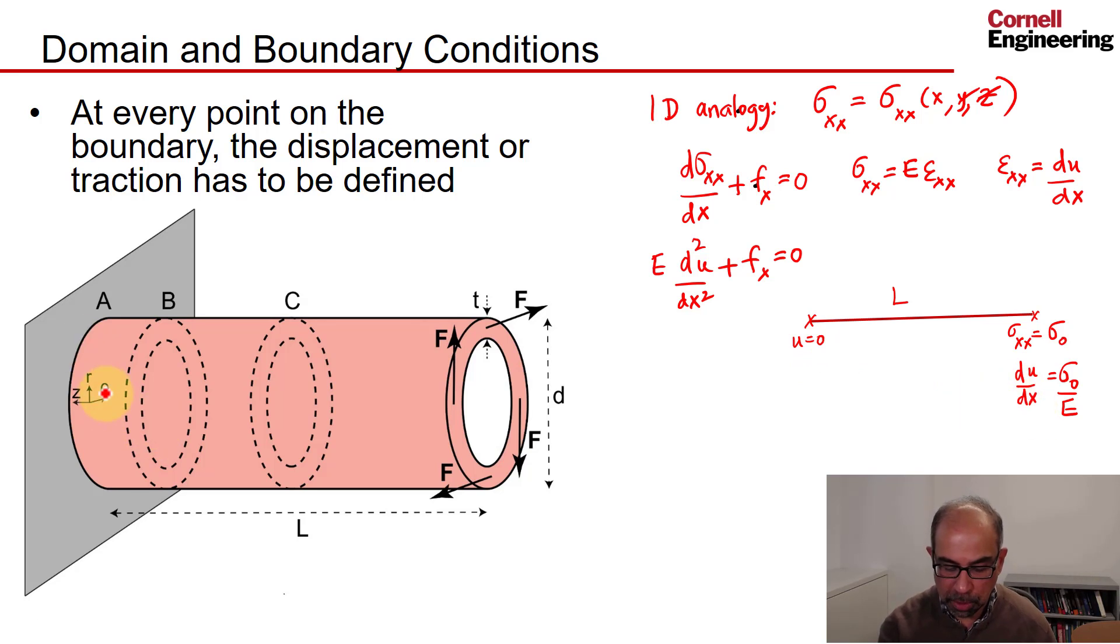Now let's go back to a 3D problem. On the left face, which is fixed, all three components of the displacement are zero. Because we have a 3D problem, instead of having one component of the displacement, we have three components of the displacement. So we have three conditions, three second order partial differential equations in terms of the displacement.